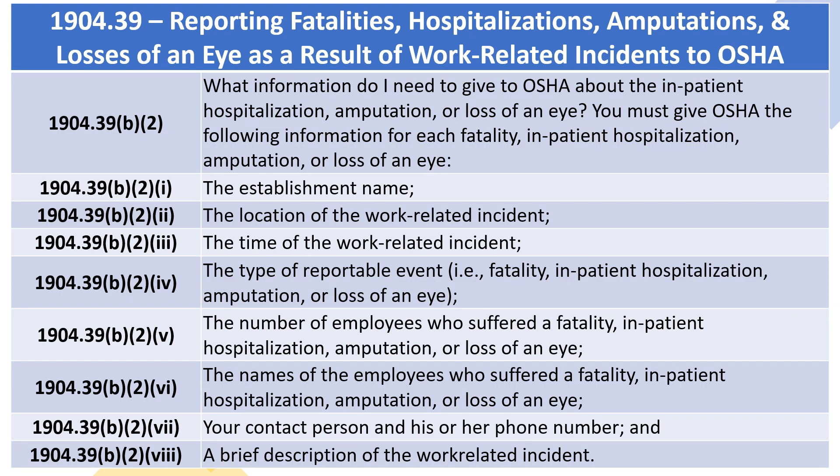1904.39(b)(2): What information do I need to give to OSHA? You must provide the following for each fatality, inpatient hospitalization, amputation, or loss of an eye: the establishment name; the location of the work-related incident; the time of the work-related incident; the type of reportable event (i.e., fatality, inpatient hospitalization, amputation, or loss of an eye); the number of employees who suffered the event; the names of the employees; your contact person and phone number; and a brief description of the work-related incident.